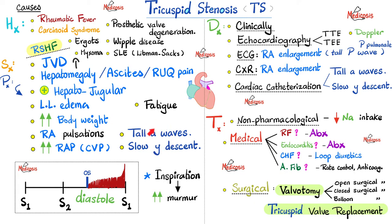On jugular venous waveforms, we notice a tall A wave. The A stands for atrial contraction — when the right atrium contracts, it encounters a narrow tricuspid valve, so the A wave is taller than normal. Next is the Y descent. The Y stands for emptying of the right atrium to the right ventricle during ventricular diastole. Since emptying is impaired, the Y descent will not be robust — instead it will be more flat, a slower Y descent. We will discuss jugular venous waveforms in more detail in a separate video in this cardiology playlist.